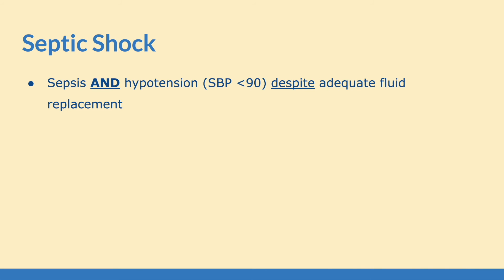For septic shock, this is when you have sepsis and hypotension — again, systolic blood pressure less than 90 — but you continue to have that hypotension despite adequate fluid replacement. So the patient is receiving fluids, but their hypotension is not improving. This is when you have septic shock.